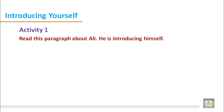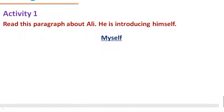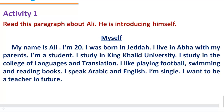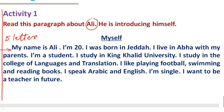Introducing Yourself, Activity 1. Read this paragraph about Ali — he is introducing himself. The title is 'Myself' and it is underlined. If we look at the full paragraph, we find that he has given an indentation in the first line — a blank space between the margin and the first word of the first line, about 5 letters space.